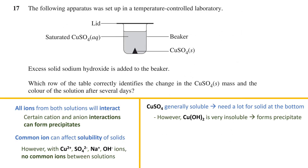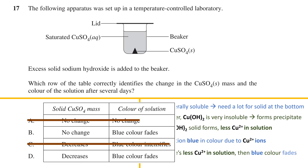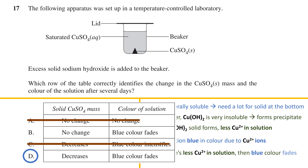Originally the solution is blue in color due to the copper ions, as indicated by options B to D. If copper ions now form copper hydroxide precipitate, the blue color of the solution will fade as more and more copper is removed. This eliminates options A and C, which do not have the solution color fading. The loss of copper ions from solution also leads to a decrease in copper sulfate solid, so option D is the answer.